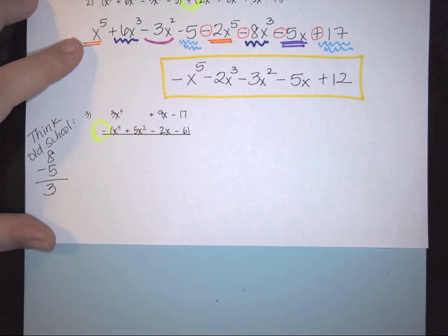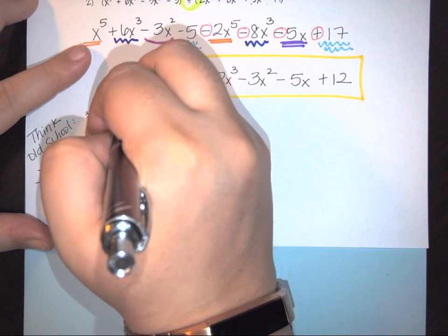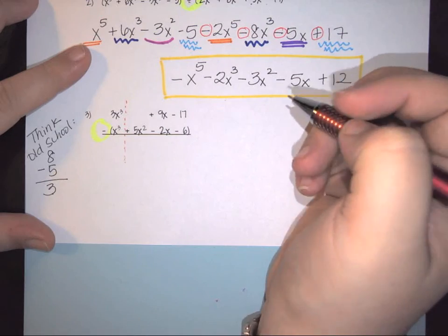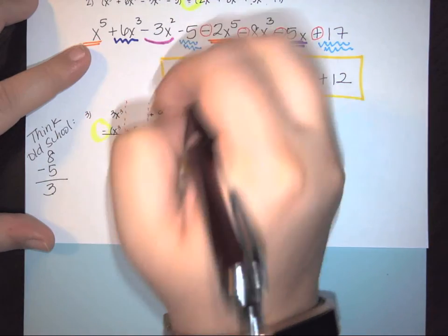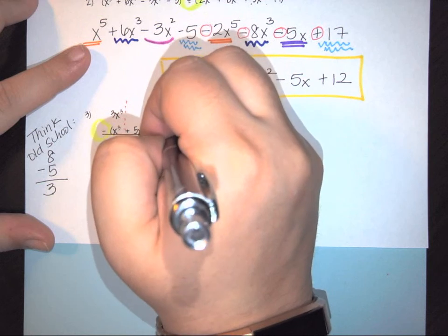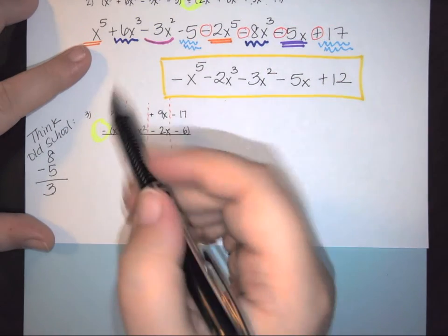So I have my vertical that I can separate out again, just like I would do for addition. So there's my cube terms. Here's my square. Here is to the power of 1. And then there is my constant.